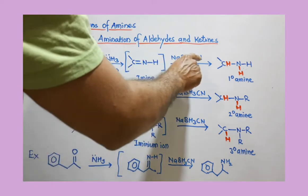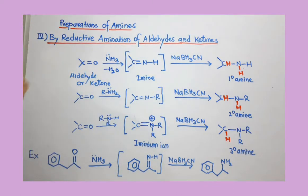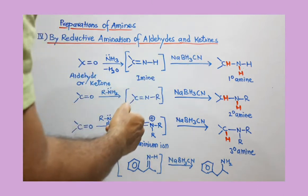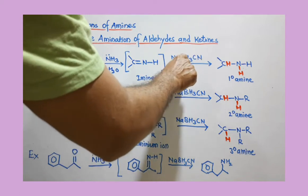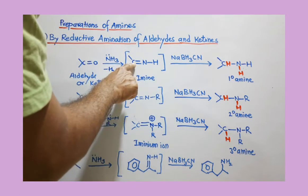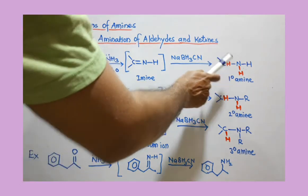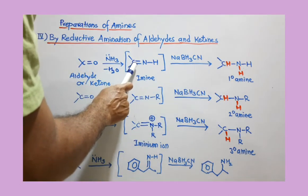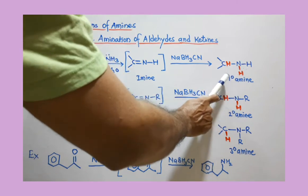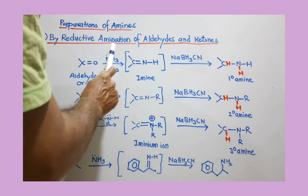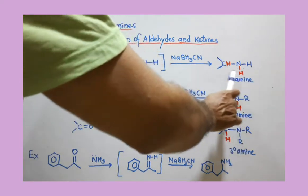This imine is now subjected to reduction using sodium cyanoborohydride, which is used very efficiently for this reduction. Reduction means addition of hydrogen — one H is added on the carbonyl carbon and one H on the nitrogen, shown in red. This removes the double bond, and when using ammonia with an aldehyde or ketone, we get a primary amine.